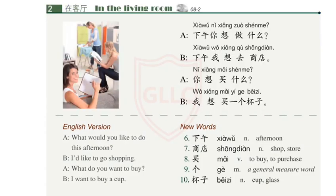New words: 想，喝茶，吃米饭。课文二（Text 2）：下午你想做什么？下午我想去商店。你想买什么？我想买一个杯子。